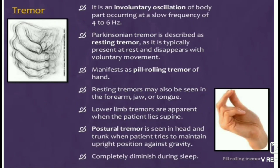Tremor is an involuntary oscillation of a body part occurring at a slow frequency of 4 to 6 Hz. Parkinsonian tremor is described as resting tremor as it is typically present at rest and disappears with voluntary movement. It manifests as a pill-rolling tremor of the hand. Resting tremors may also be seen in the forearm, jaw, and tongue. Lower limb tremors are apparent when the patient lies supine. Postural tremor is seen in the head and trunk when the patient tries to maintain an upright position against gravity. Tremor is completely diminished during sleep.